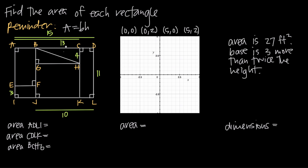The area of a rectangle can be found by multiplying the length of the base by the length of the height. If we call the horizontal dimension the base and the vertical dimension the height, then we need to find the base of this outermost rectangle and multiply it by the height. We already know the height is 11 — the length of DL is 11. The length of AD is 15. So to find the area of ADLI, we multiply 15 by 11, or base times height, giving us 165 square units.